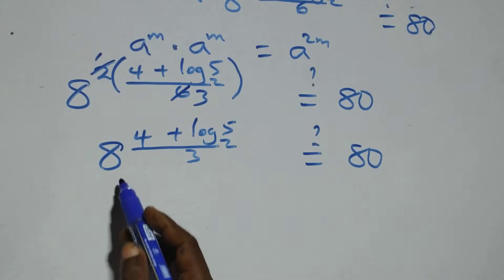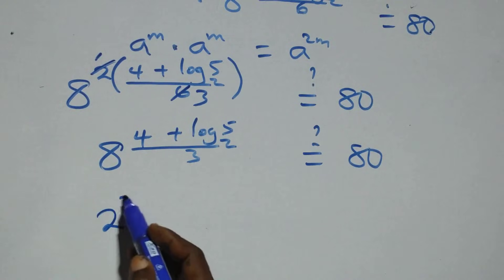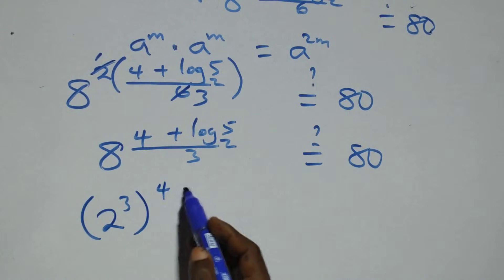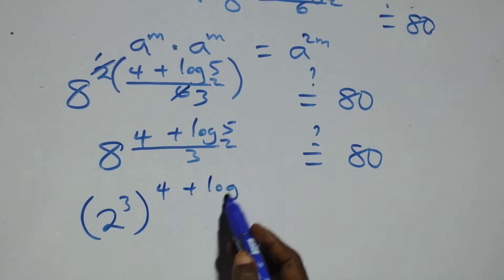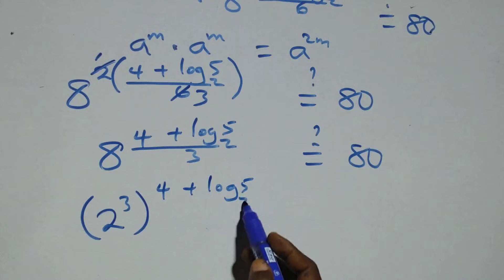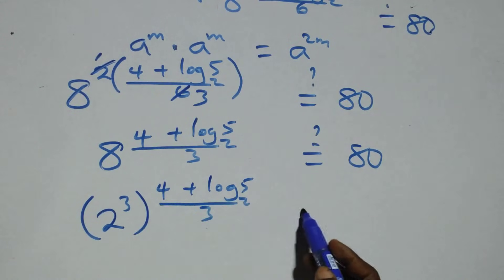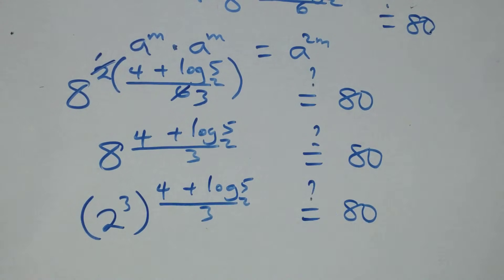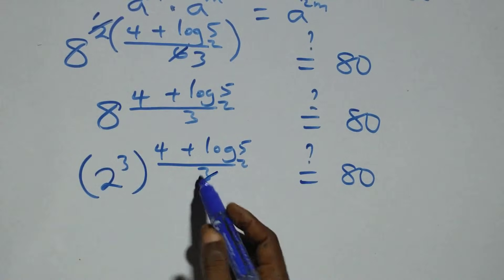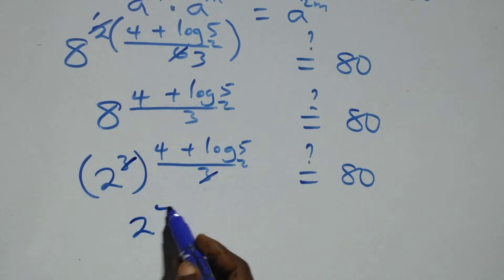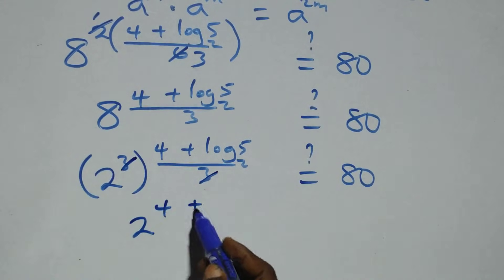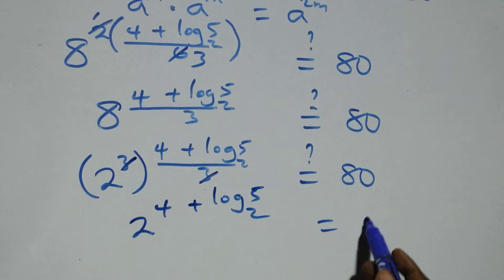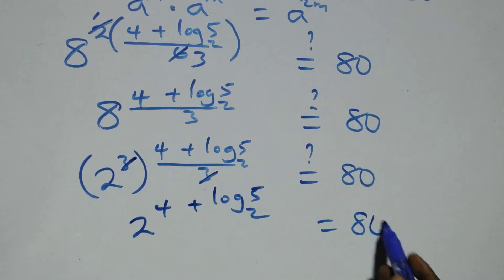Then also, 8 can be written as 2 raised to power 3, which is raised to the power (4 plus log₂5) over 3, which equals 80. Here, the 3 cancels with the 3 in the denominator. We have 2 raised to the power (4 plus log₂5), which equals 80.